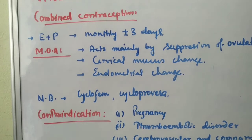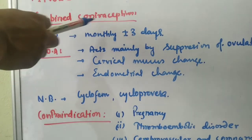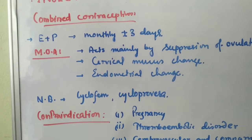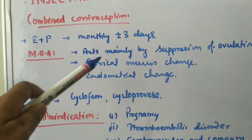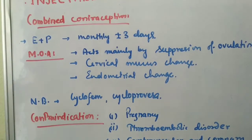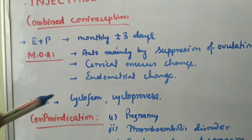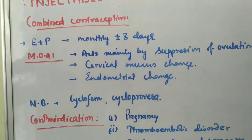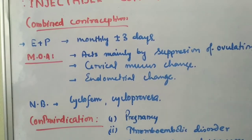Combined injectable contraceptives contain a combination of estrogen and progesterone. They are normally given monthly, plus or minus three days. Mechanism of action: it mainly acts by suppression of ovulation, changes in cervical mucus create an obstacle so sperm cannot cross, and endometrial changes also occur. Two drugs used in clinical trials were Cyclofem and Cycloproverа, and the results were quite good.